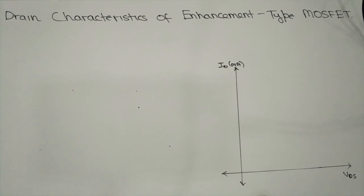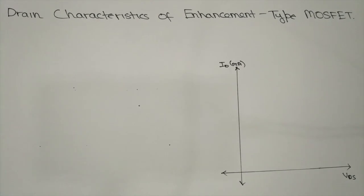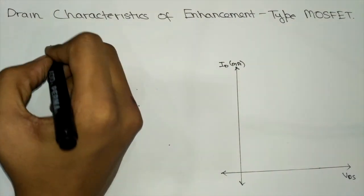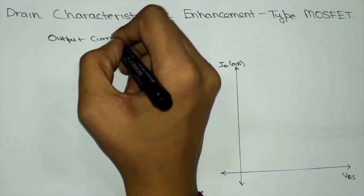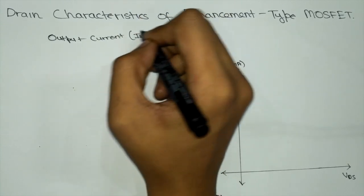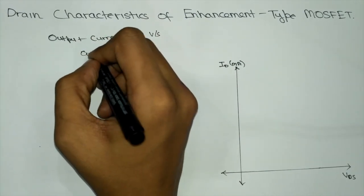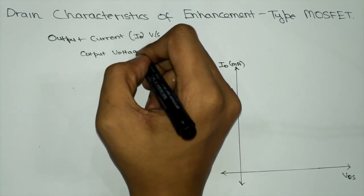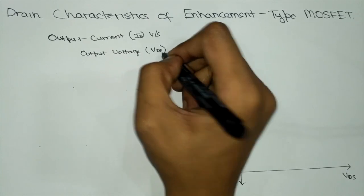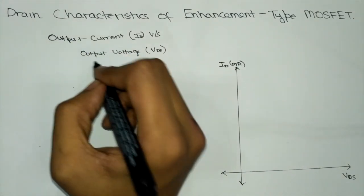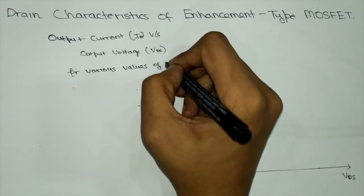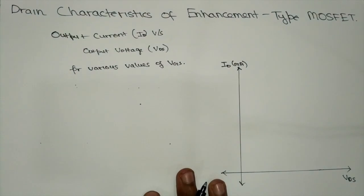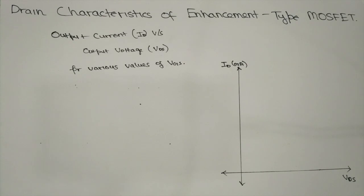We will be doing the drain characteristics of enhancement type MOSFET. The drain characteristics of enhancement type MOSFET is given as the plot of output current, the drain current ID, vs the output voltage VDS for various values of VGS. This is the definition of output characteristics. Initially, when VDS is 0, the ID value is 0.